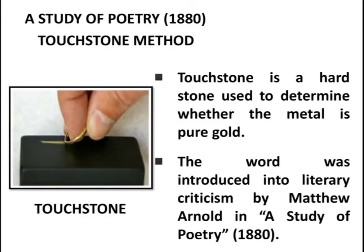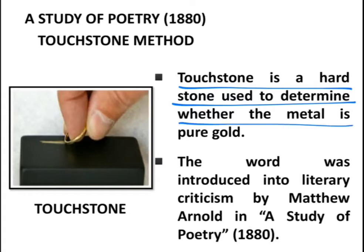What is a touchstone? A touchstone is a hard stone used to determine whether a metal is pure gold. It was used during ancient times, during the Harappan period of the Indus Valley civilization for testing the purity of soft metals. It was also used in ancient Greece.